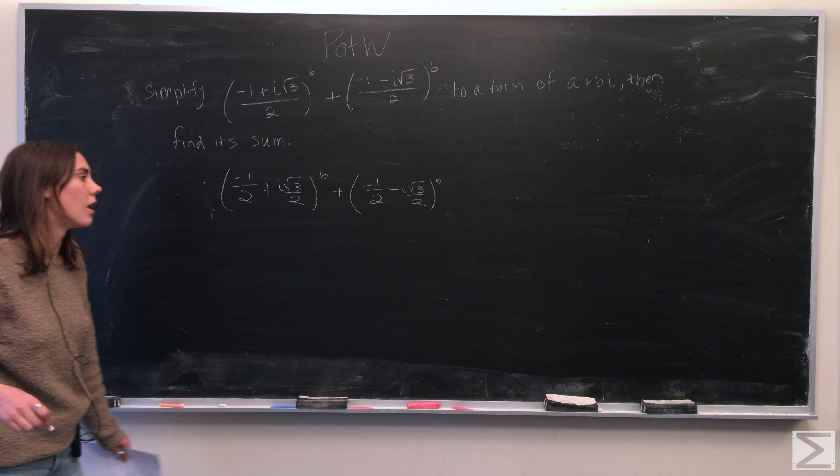And we get cosine 4 pi plus i sine 4 pi plus cosine 8 pi plus i sine 8 pi. And what you'll notice is that these two terms actually go to 0.